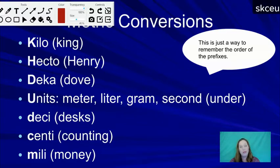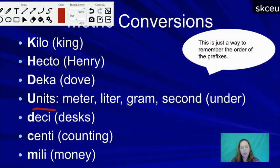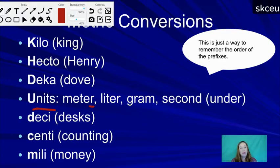A common mnemonic taught in fifth grade is 'King Henry Dove Under Desks Counting Money.' Another version is 'King Henry Died Monday Drinking Chocolate Milk,' which uses meters as the base unit. Either way, just remember the order. A kilometer is a much longer distance than a meter — you have many meters filling up one kilometer, so if you go one kilometer, you've gone a thousand meters.